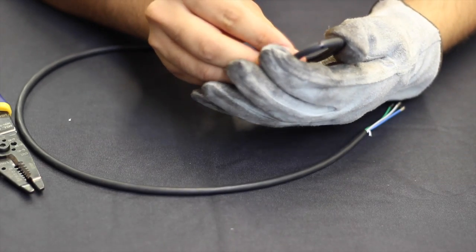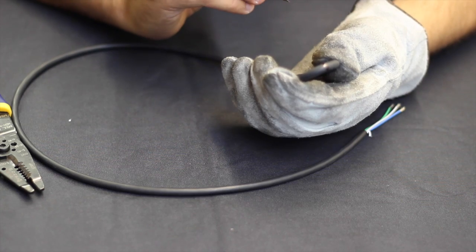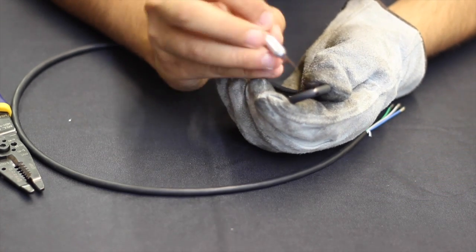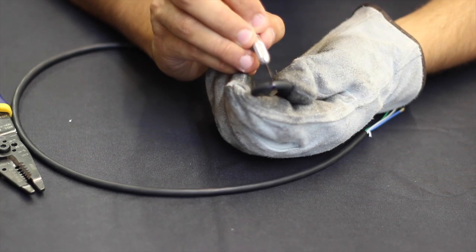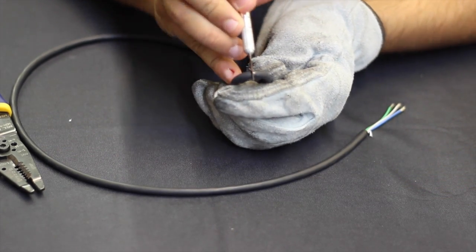It makes it easier to cut open the jacket if you bend it a little bit so that the jacket will naturally split open as you cut it. Then I'm going to take the X-Acto knife and just very gently cut open the jacket on the top here. Make sure to use a nice sharp blade to make this easier.